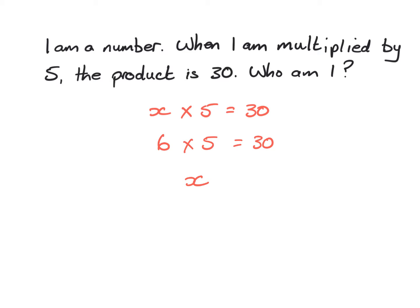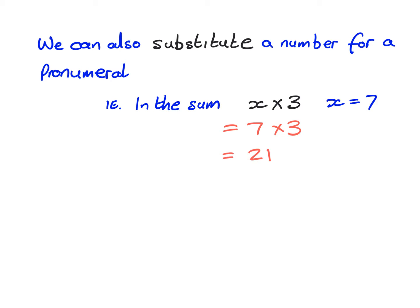Therefore the value of x must be six. Also in algebra we can substitute a number for a pronumeral. For example, in x times three, if x is seven, then seven times three gives the answer twenty-one.